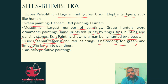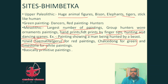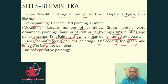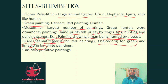In the Mesolithic period, the largest number of paintings are found — groups of hunters, animal paintings, handprints, footprints made by fingertips, hunting and dancing scenes. Humans depicted wearing ornaments during hunts are also shown. A famous painting shows a man being hunted by a beast, reflecting real-life dangers of that time.